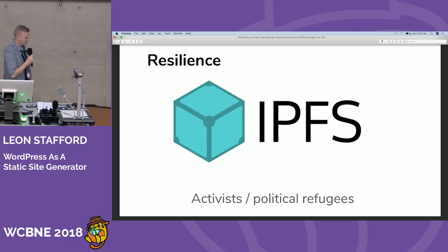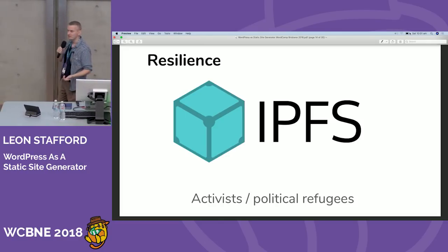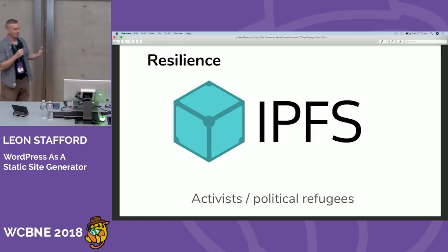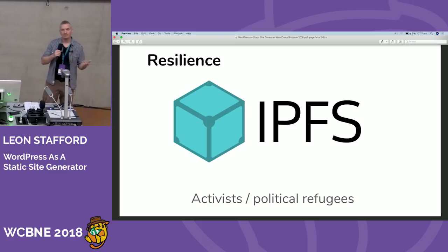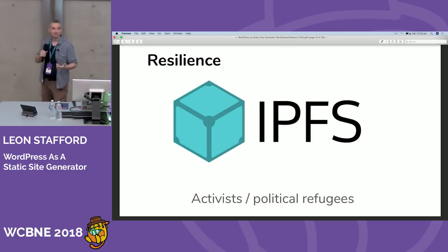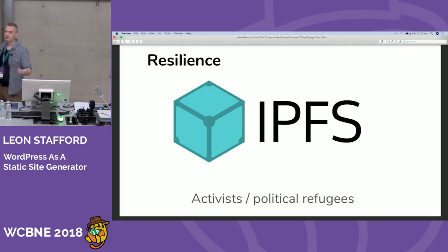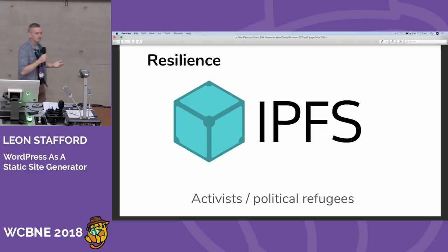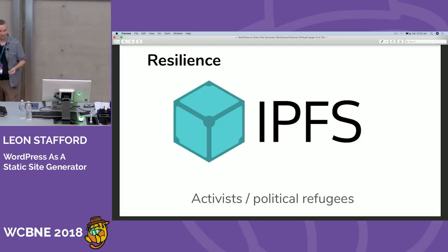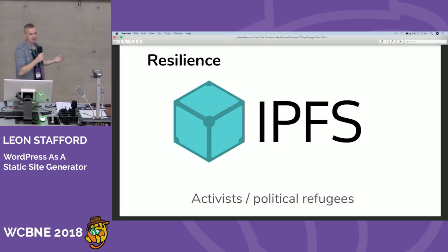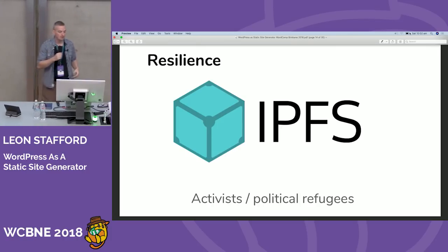IPFS stands for Interplanetary File System — think of it like Bitcoin or blockchain, a distributed decentralized network. You can take a static site and put it on IPFS. It's not going to be a business case for most of us, but it's cool to think about in terms of censorship resistance. We saw the YouTube outage last week — Pakistan trying to block sites for their users. If that case ever happens, you can put a static site on something like IPFS and you're resilient to those kinds of governmental controls.